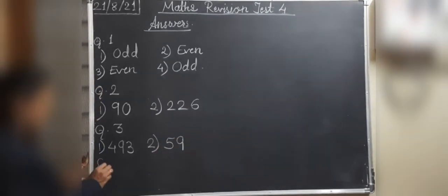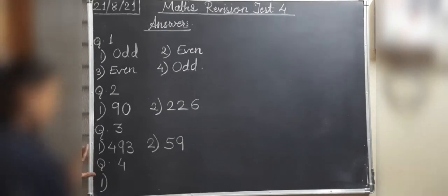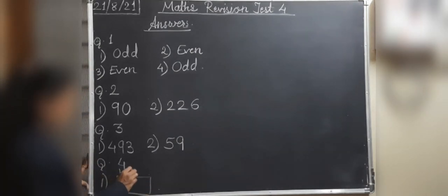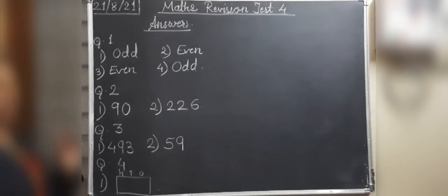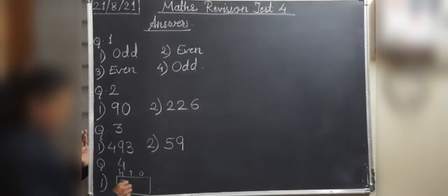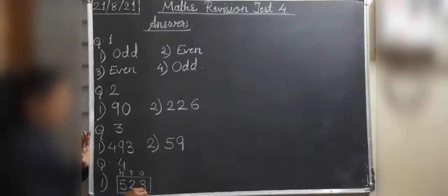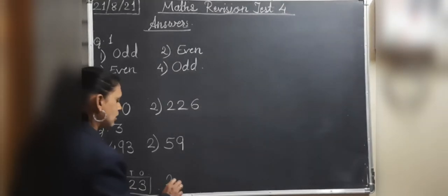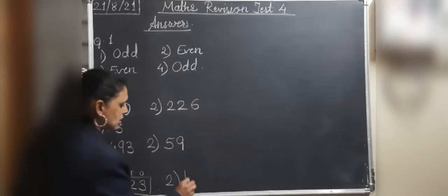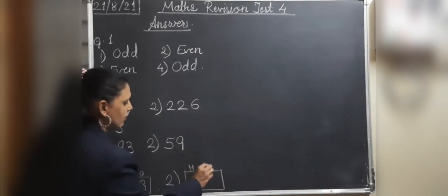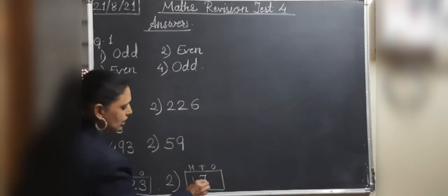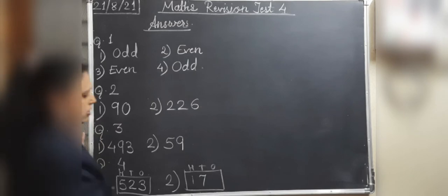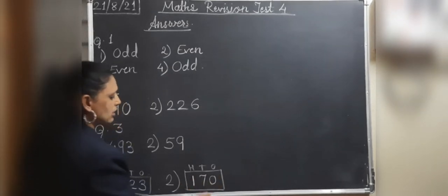Question 4 answers: First abacus — hundreds column has 5 beads, tens column has 2 beads, ones column has 3 beads, so the answer is 523. Second abacus — hundreds column has 1 bead, tens column has 7 beads, ones column has no beads, so the answer is 170.